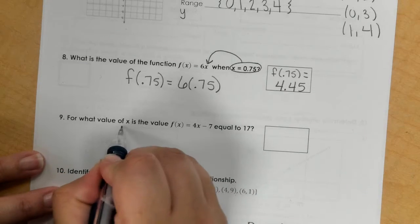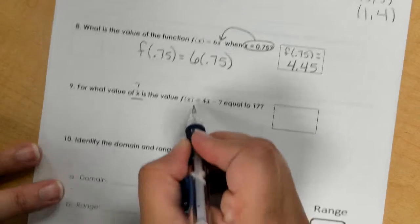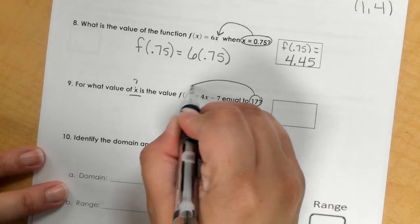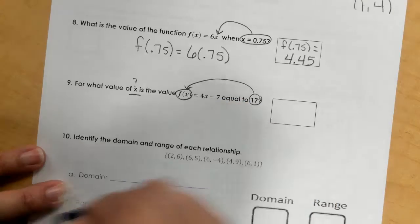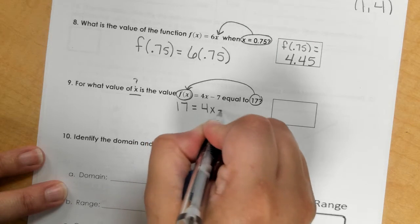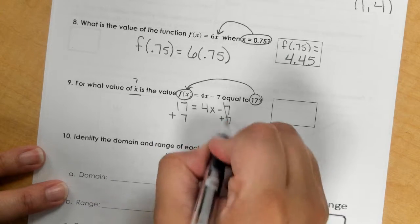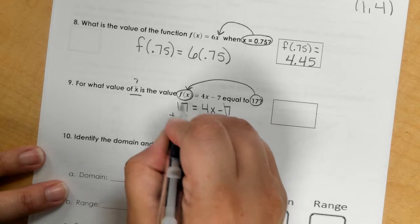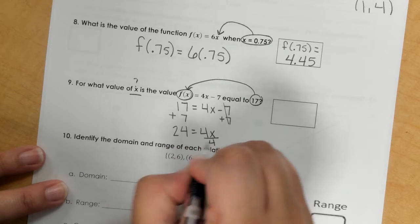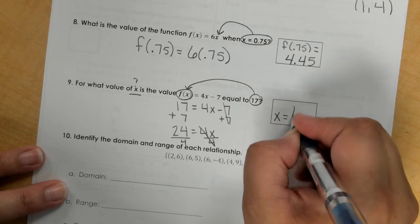For what value of x is f(x) = 4x - 7 equal to 17? You plug 17 in for the whole f(x) and solve the equation for x. So we add 7, divide by 4, and that would be 6.